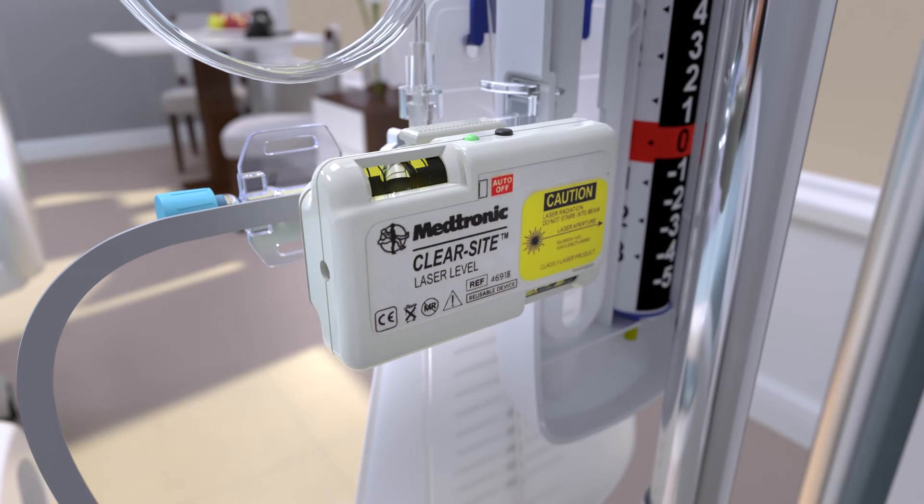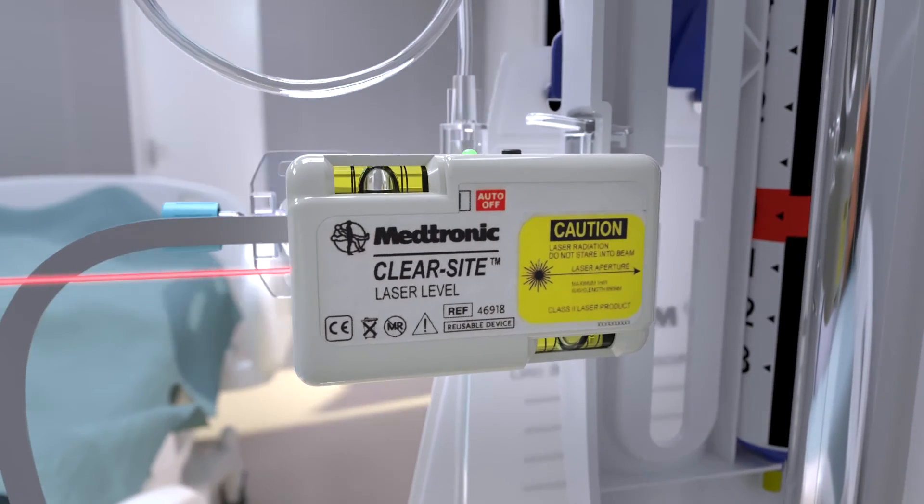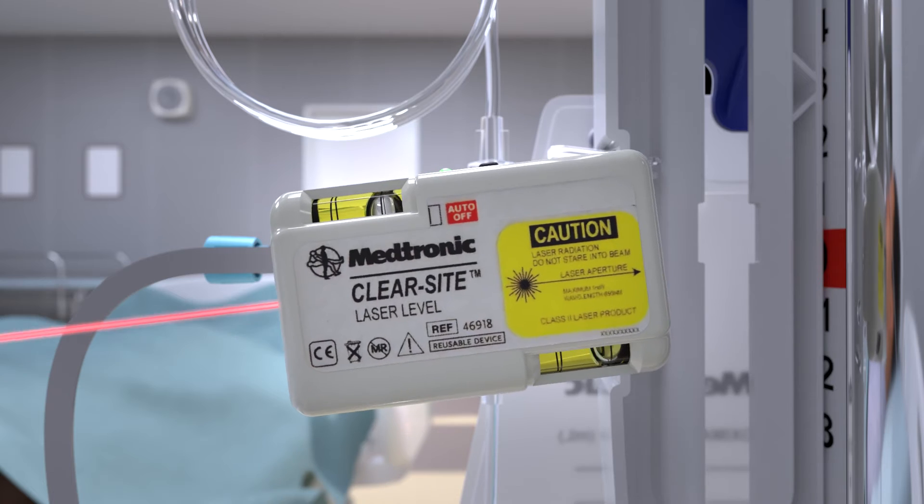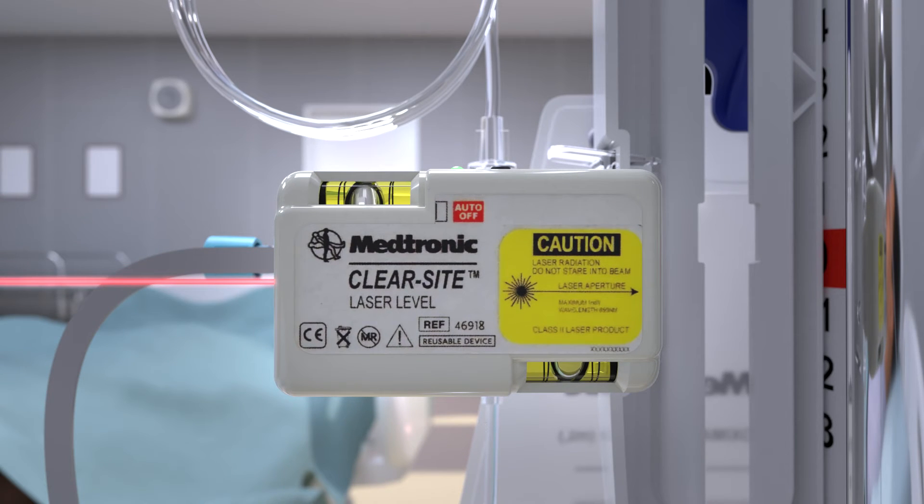Clip the laser level onto the back of the main system stopcock bracket. Turn the laser on by pressing and releasing the black power button. The green LED should indicate the laser is on. Utilizing the built-in yellow bubble levels ensure the laser is horizontally level.